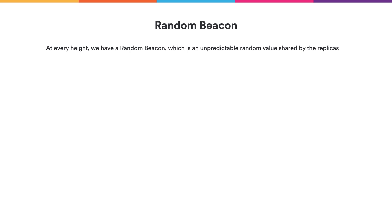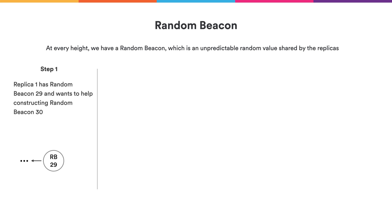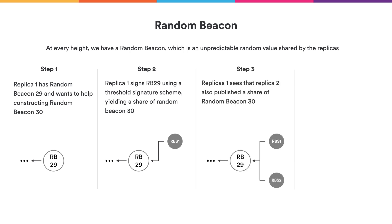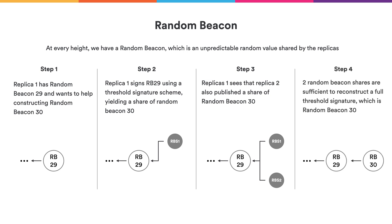A replica with a random beacon at height 29 might decide it's time to create the next random beacon. To do that, it creates a special signature on the previous random beacon value — an artifact shared via the gossip network called a random beacon share. If we get another random beacon share, we can combine the shares to construct the next random beacon value. We do this using special signatures, namely threshold BLS signatures.